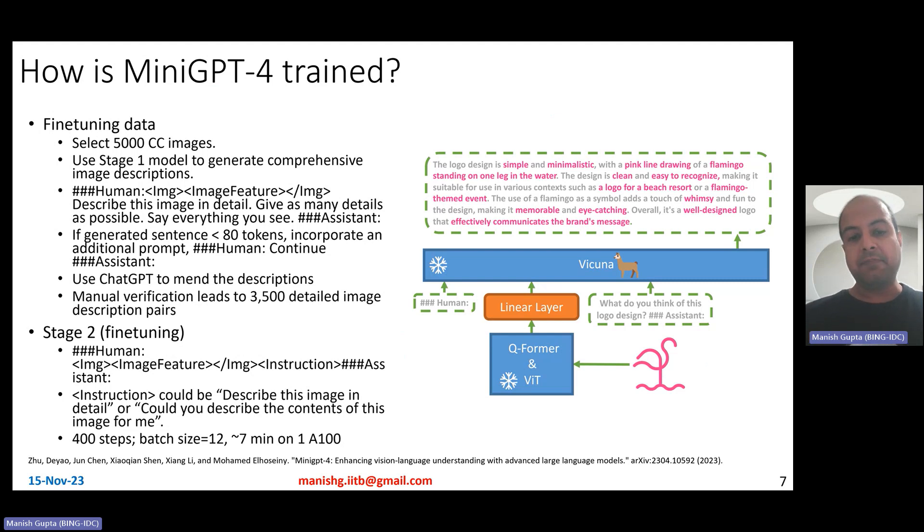So to fine-tune, you need chatbot-y fine-tuning data. So how do they generate that? Well, the way they generate that is by starting from 5,000 Conceptual Captions images, use the Stage 1 model to generate comprehensive image descriptions. So you basically tell the Stage 1 model, which I just talked about on the previous slide, hey, given this image with the image features, describe it in detail, give as many details as possible, and generate some output. If the output is less than 80 tokens, it's not descriptive enough. You want longer outputs, you can just prompt it further by saying continue, and then Assistant continues to generate more things. Now, after this Stage 1 model has generated stuff, it's still incoherent at this stage. And therefore, what you do is to further refine it using ChatGPT. So you use ChatGPT, the prompt mentioned in the paper, to mend the descriptions further.